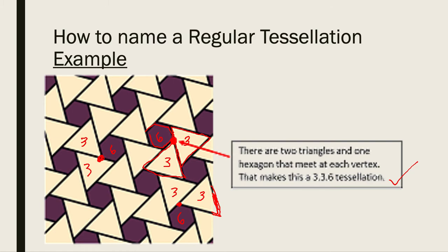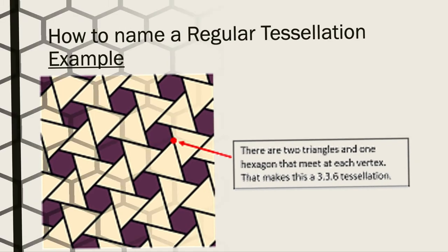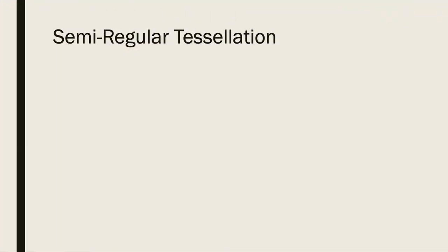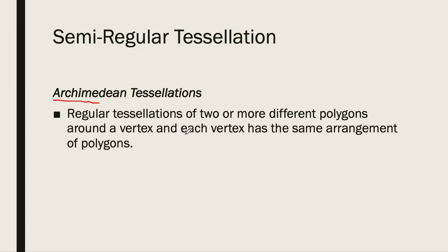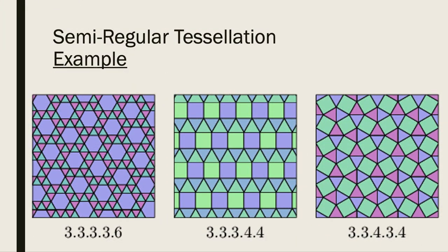Now let's move to semi-regular tessellations — the Archimedean tessellations, named after the great Archimedes. A semi-regular tessellation is made of two or more different regular polygons around each vertex, and each vertex has the same arrangement of polygons.